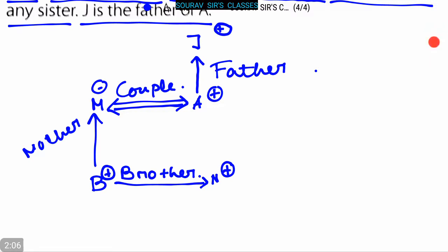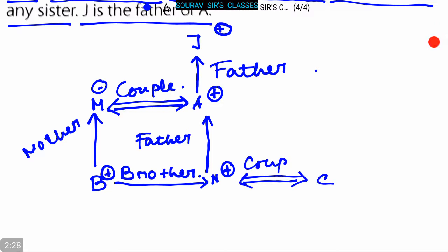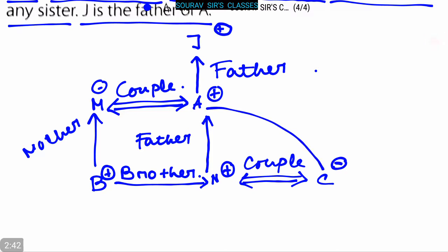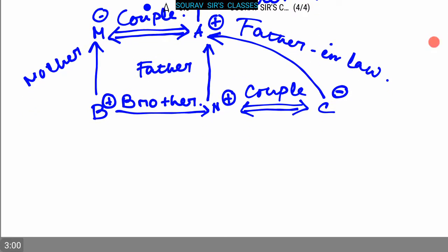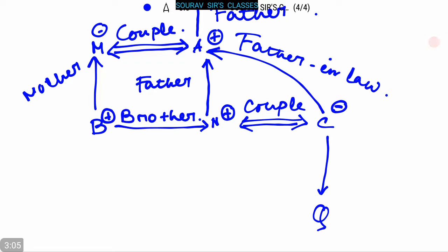B and N are the two sons of M and A. The relation between A and N is father. N is married to C, so they are a couple. C is female. The relation between A and C is father-in-law.